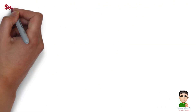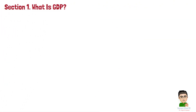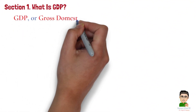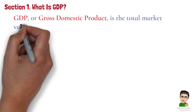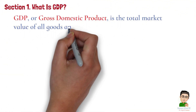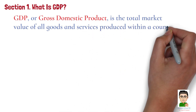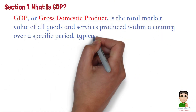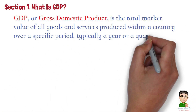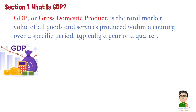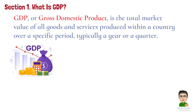Section 1: What is GDP? Let's start with the basics. GDP, or Gross Domestic Product, is the total market value of all goods and services produced within a country over a specific period, typically a year or a quarter. In simple terms, GDP tells us how much a country is producing and how its economy is performing.